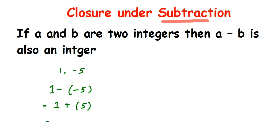So 1 plus 5 equals 6, and 6 is also an integer. You can see that when you subtract two integers you always get a final answer which is also an integer. You can take any small or big number — your answer will always be an integer.